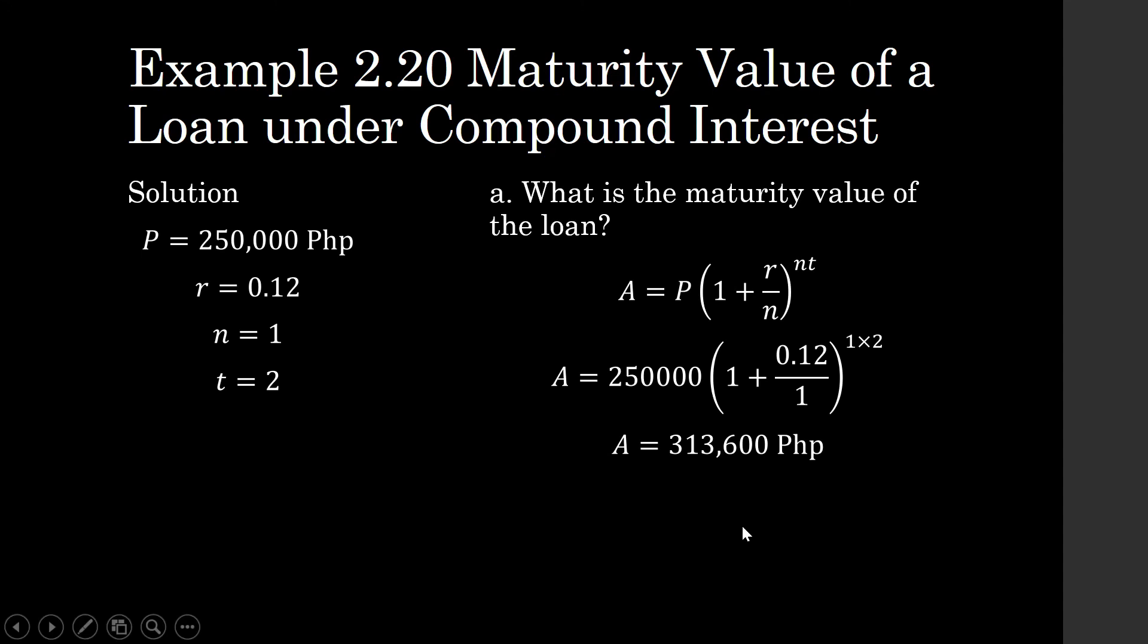So, the interest I is just the difference between the accumulated value or the maturity value of the loan minus the initial loan, minus the original loan.